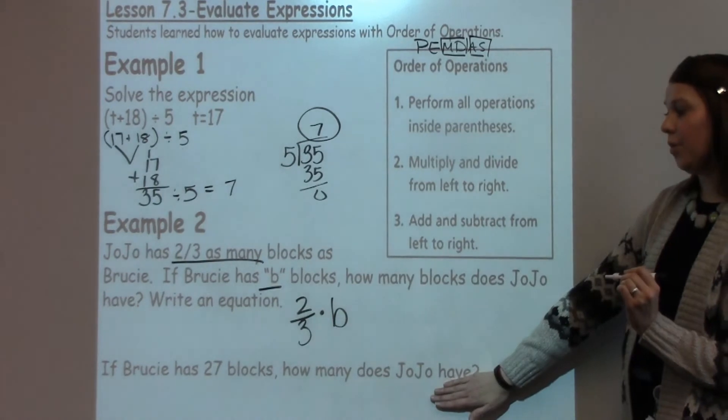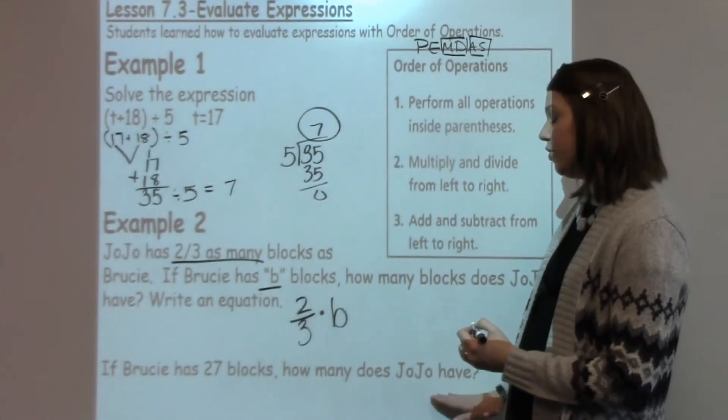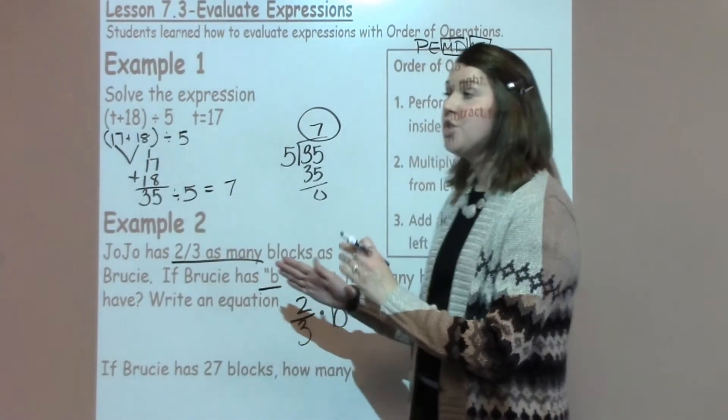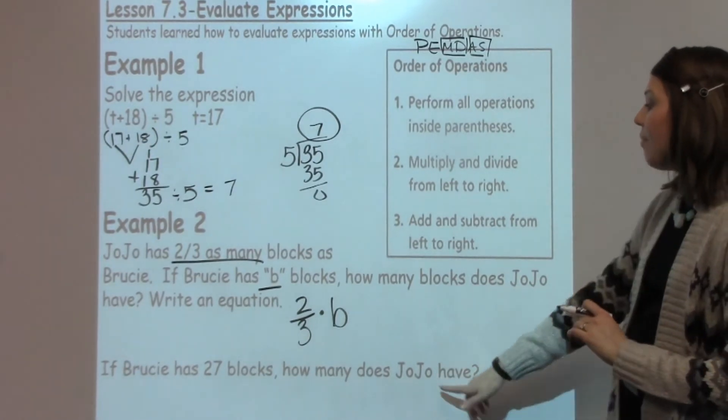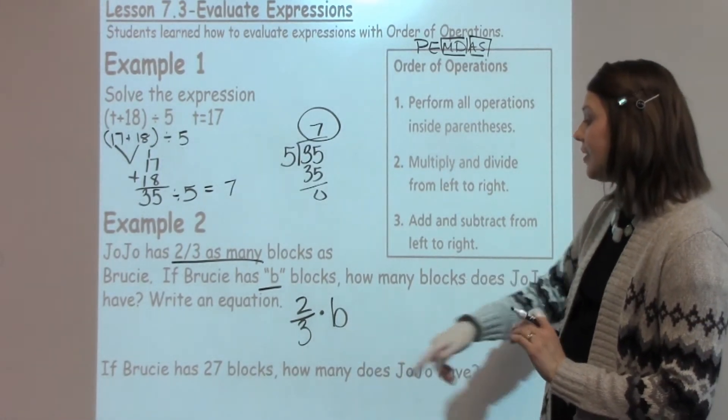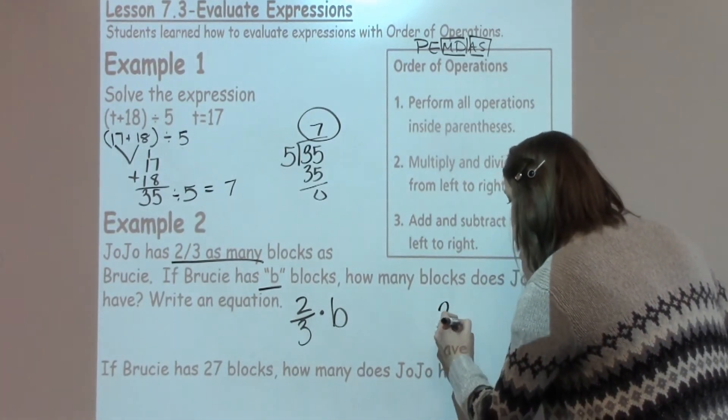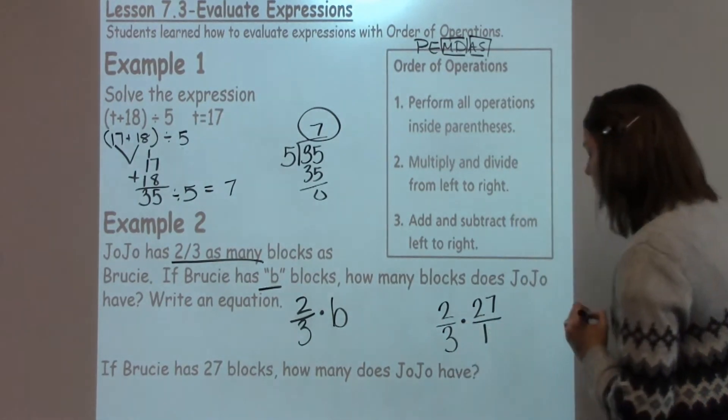Now if we go on to the second part of the question, it says if Brucey has 27 blocks, how many does Jojo have? Well, reminding myself that Jojo has 2 thirds as many, which means that he should have fewer than Brucey, and Brucey has 27. I'm going to go ahead and plug in 27 here for my B. So I'm going to take 2 thirds times 27. I'm going to make that a fraction over 1.